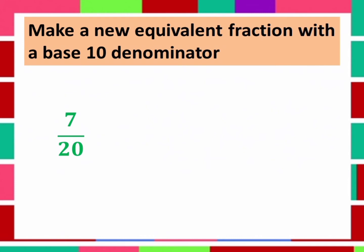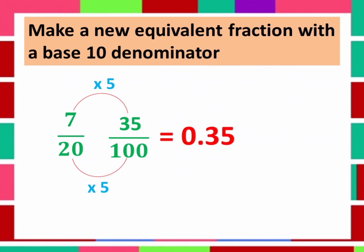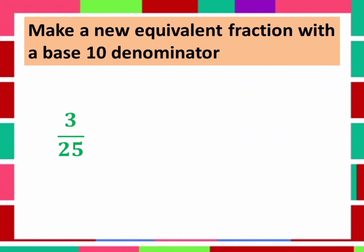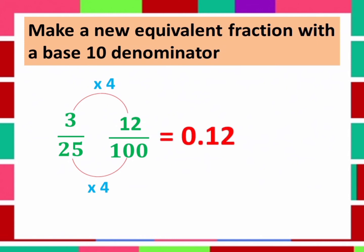Next example is 7 over 20. Make an equivalent fraction — we multiply 20 by 5 to get a denominator of 100. Then, multiply 7 by 5 and it will become 35. So 7 over 20 is now 35 over 100, and converted to decimal, the answer will be 0.35. Next is 3 over 25 — multiply 25 by 4, so 25 times 4 is equal to 100. Multiply 3 by 4 and the answer is 12. We have 12 over 100, and 12 over 100 is equal to 0.12 in decimal.